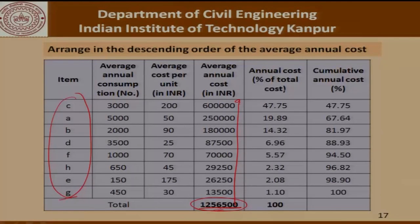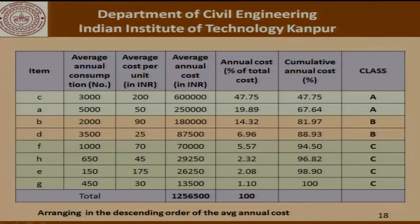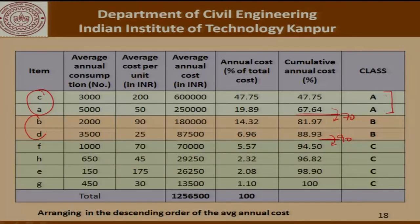We find that item C uses 47.75% of the total allocation and the percentages vary down to item G which comprises only 1.1%. Taking a cumulative cost, we can now classify these items as A, B and C. These two become class A because their cumulative total crosses 70% at that point; the next two cross 90% at that point — therefore items C and A are classified as class A, B and D as class B, and the remaining items as class C.